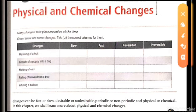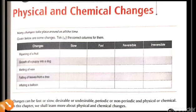A chemical change is a change where a substance is changed chemically. When a new substance is formed and the change is irreversible, it is called a chemical change. For example, when we are cooking food with vegetables, it is irreversible and a new substance is also formed, so this is called a chemical change.